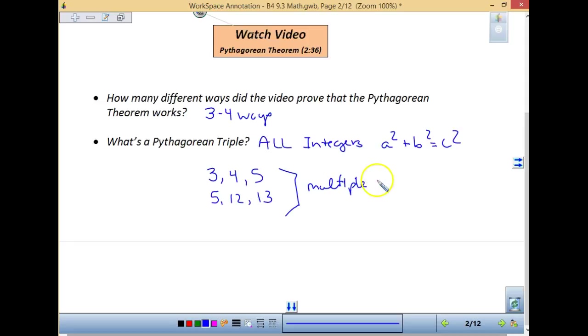So when I think of a multiple of three, four, and five, I could take each of the numbers here times three. So I would have nine, twelve, and three times five would give me fifteen. And that would be another triple as you look at that.